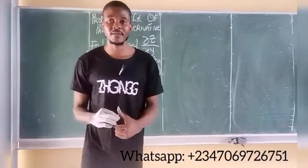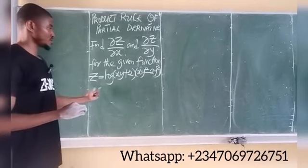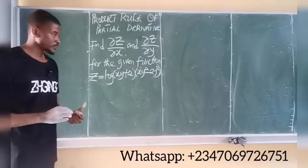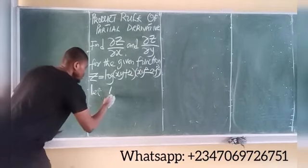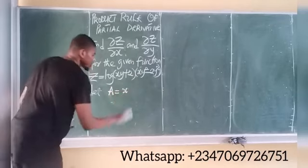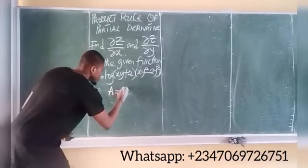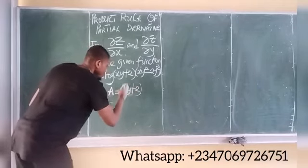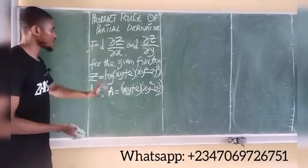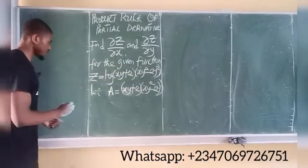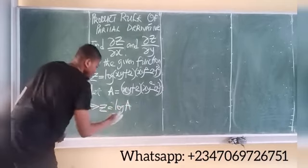Welcome to Engineer's Mindset. We are given to find partial z partial x and partial z partial y for the given function. This is actually a logarithmic function. What I will do here first is let a be equal to xy plus 2 multiplied by xy squared minus 2y squared. So I will say let a be equal to the whole of this function.